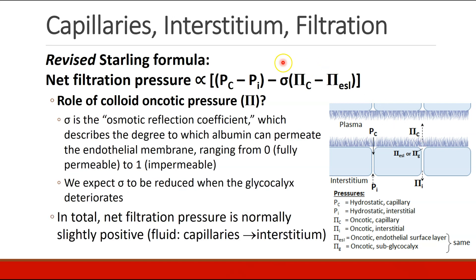What is this little sigma sitting over here? It's called the osmotic reflection coefficient. It basically describes how much albumin can permeate this endothelial membrane. Zero would be fully permeable and one would be impermeable, so normally we expect this number to be close to one.